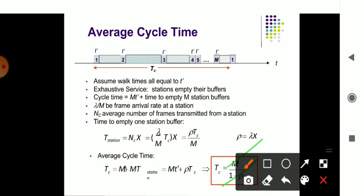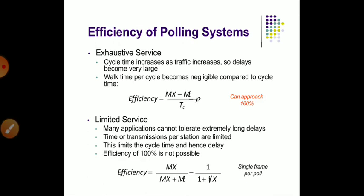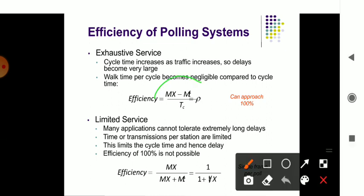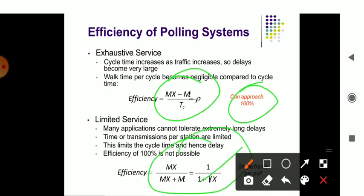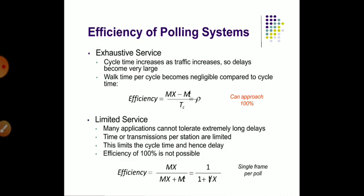The average and efficiency of the polling system can approach 100 percent if you improve the number of frames, maintain the send and receive time, and maintain the walk time and cycle time. The frames are bifurcated and executed, and execution time is one by one plus t divided by x. In tomorrow's session, we will be learning about token ring passing. Thank you.